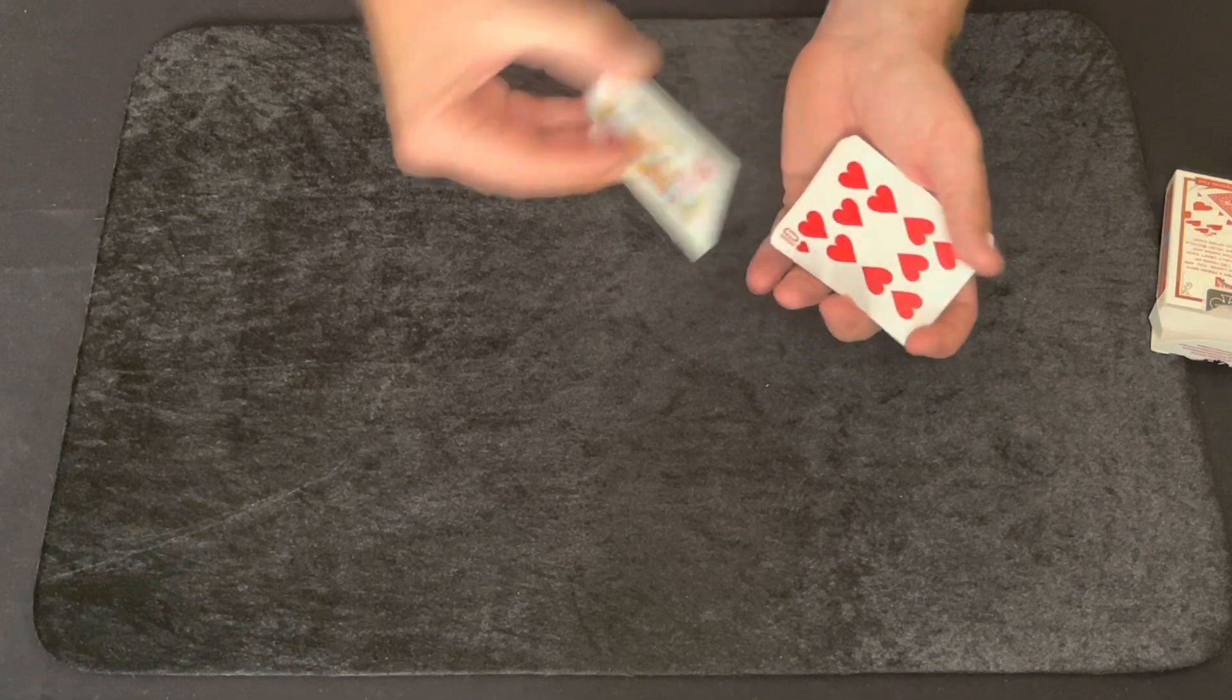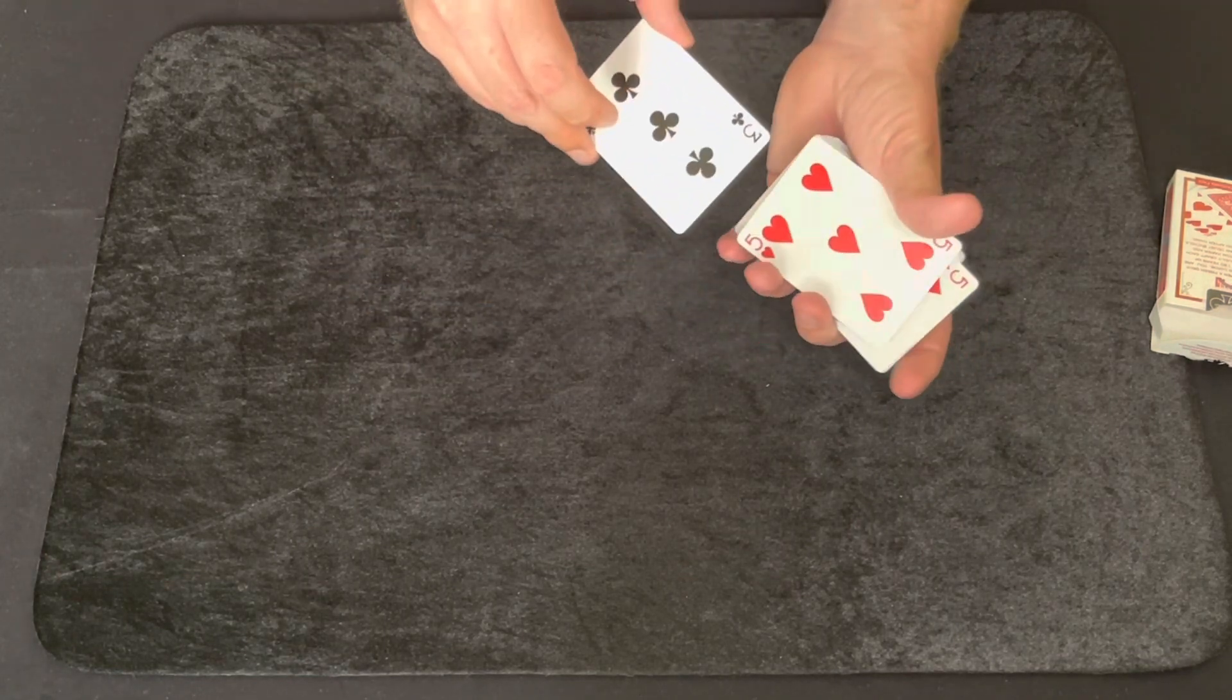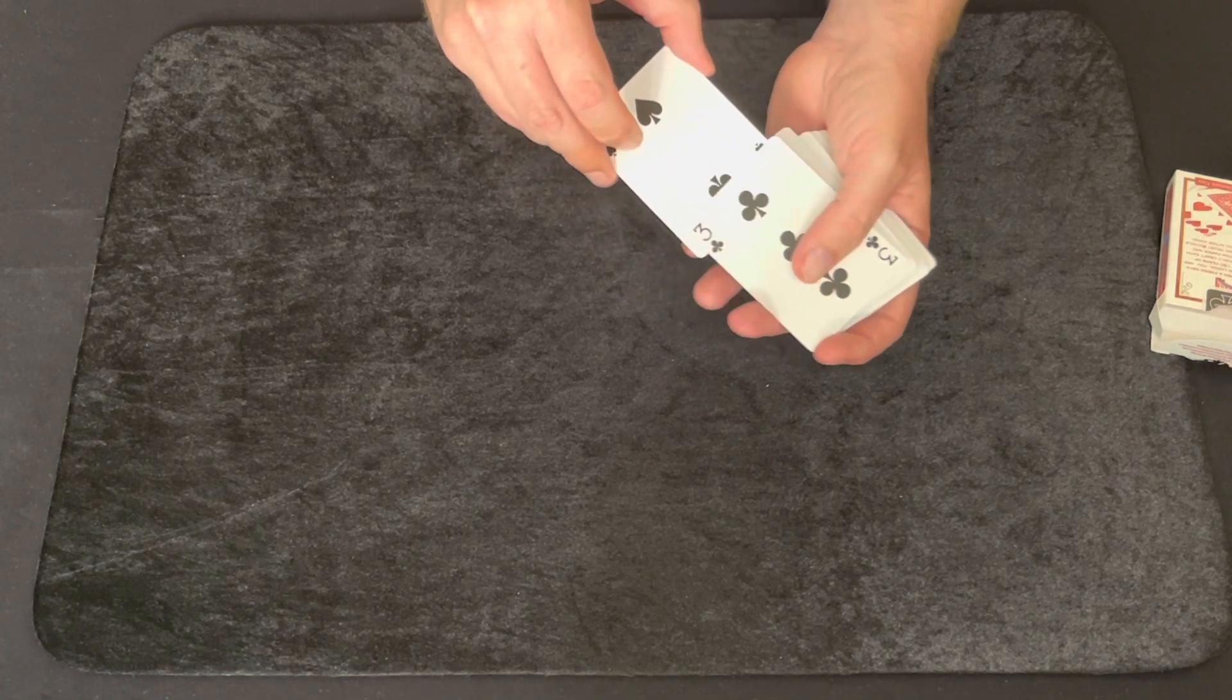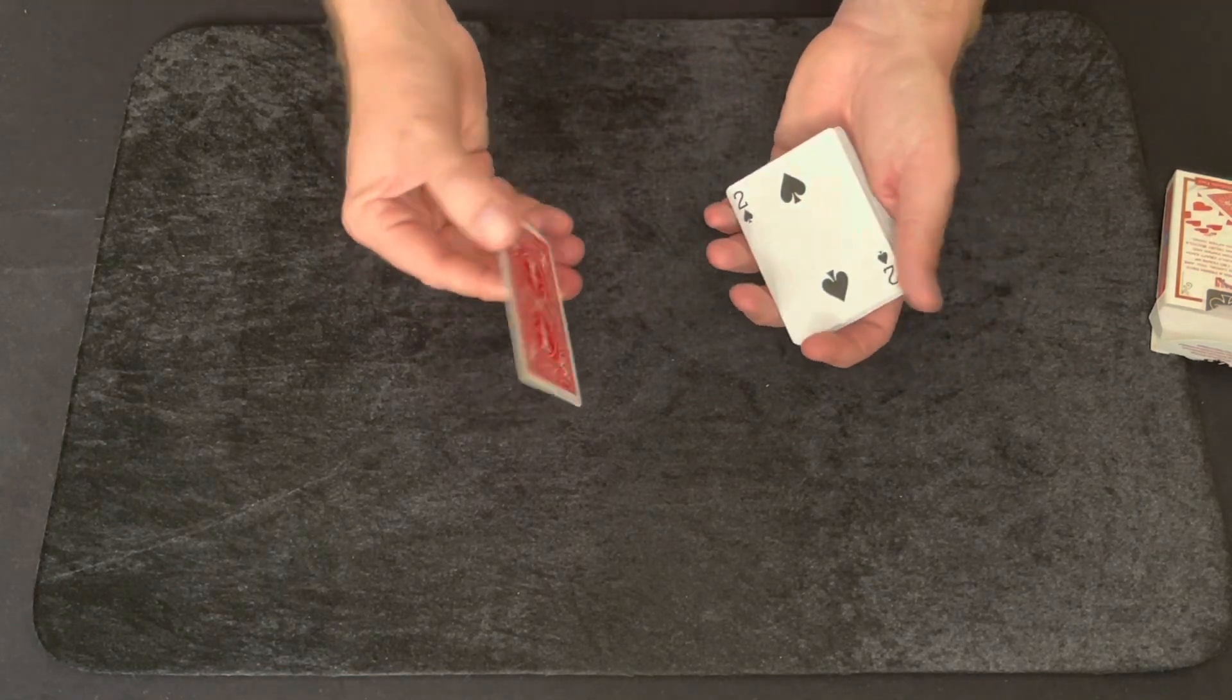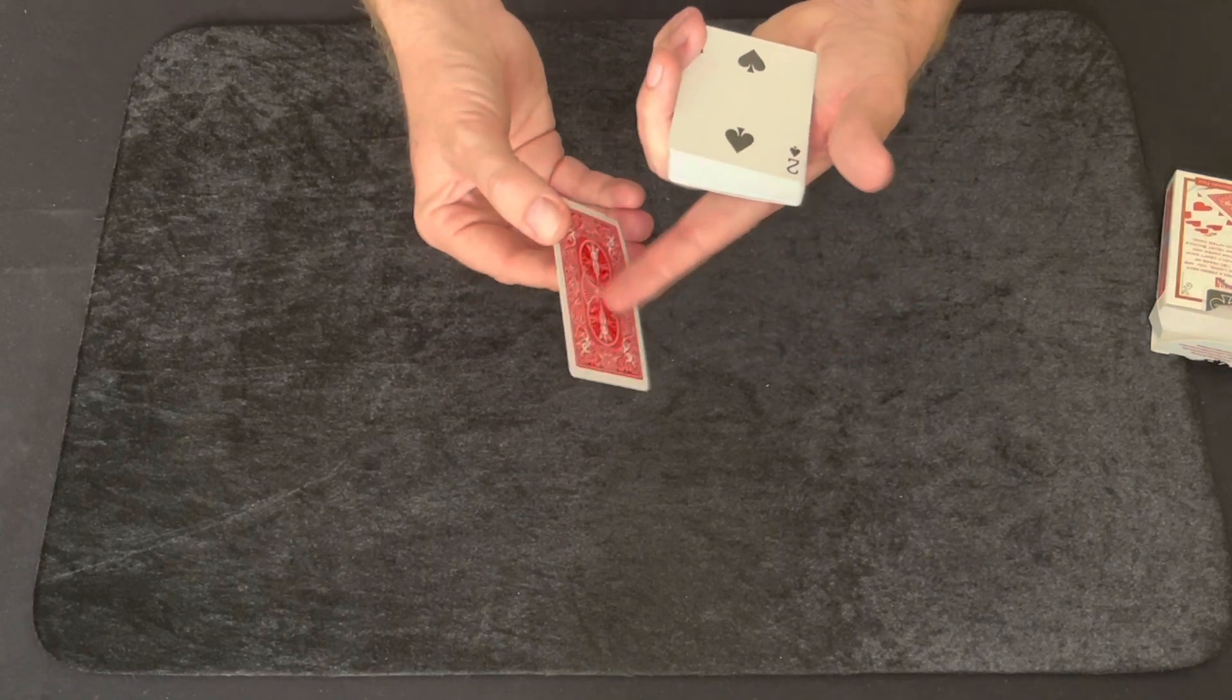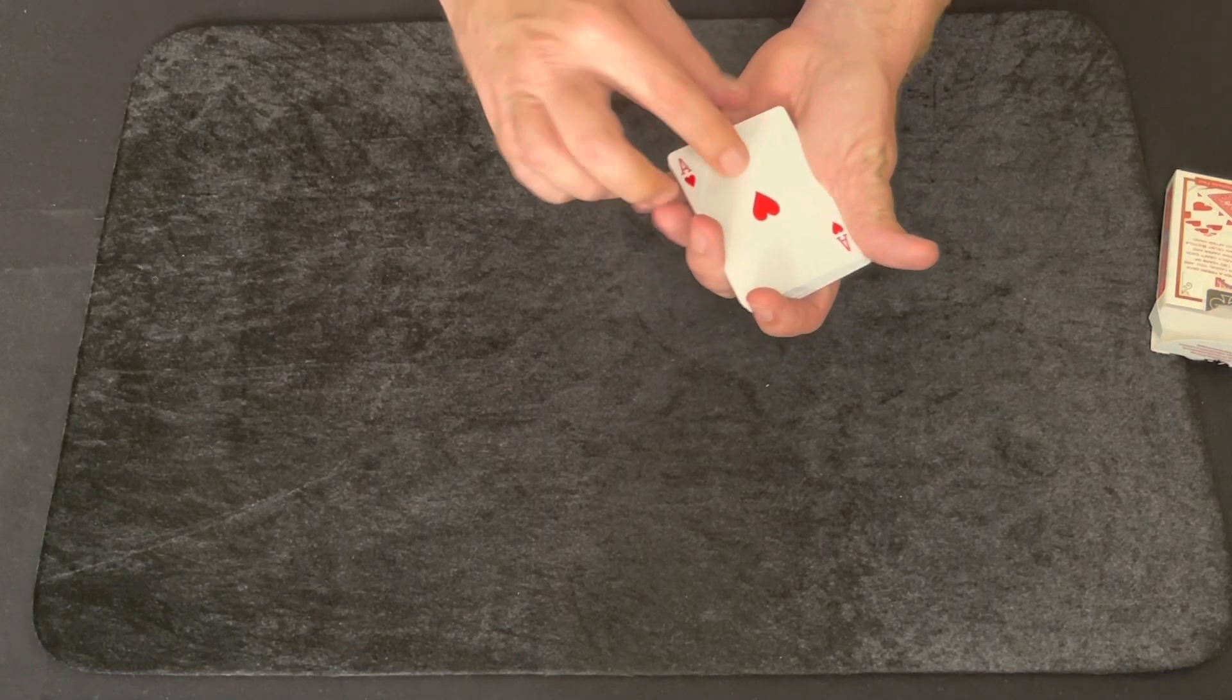And then when you get to the end, which is why you wanted to remember that second card the ace of hearts, you're just grabbing pretty much one card off the top each time and sometimes you can use your thumb too. Show the back until you get to the ace of hearts. Now this is two cards, your eight of diamonds is here and your ace of hearts is in front of it and then that ace of hearts just goes on the bottom.